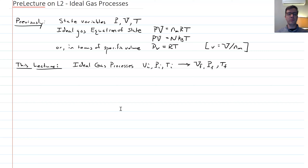Hopefully you're also familiar with the ideal gas equation of state: PV = NmRT, where Nm is the number of moles. You can also write this as PV = NkBT, where N is the number of molecules or particles. Or in terms of the specific volume — the volume per mole, small v — you could write Pv = RT.